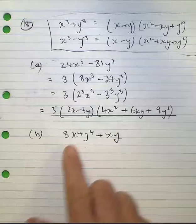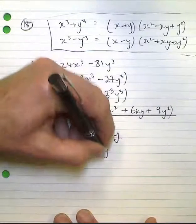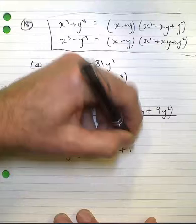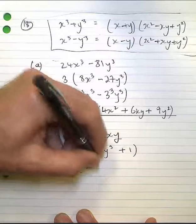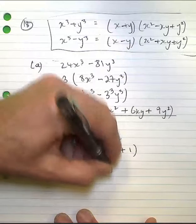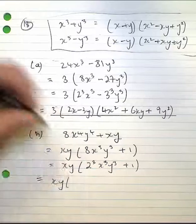In B we can take a common factor of x y out. If you like, I'll rewrite that as two cubed x cubed y cubed plus one and I can write out my expression.